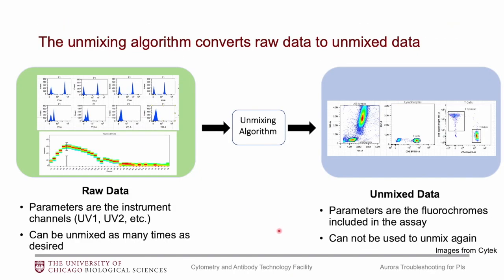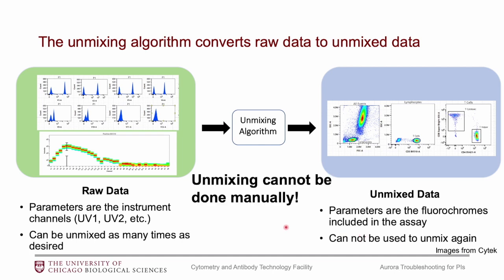When you're running the experiment, you're going to get raw data — FCS files that can be opened in FlowJo or FCS Express. If you open them, you'll see that the parameters are just the 64 detectors on the instrument. This data then goes through the unmixing algorithm, and you'll get a second FCS file containing the unmixed data, where the parameters are the fluorochromes included in the assay. Raw data can be unmixed as many times as you want, whereas unmixed data cannot be used to unmix again — so keep both FCS files. Also note that unmixing cannot be done manually; it has to go through the algorithm.